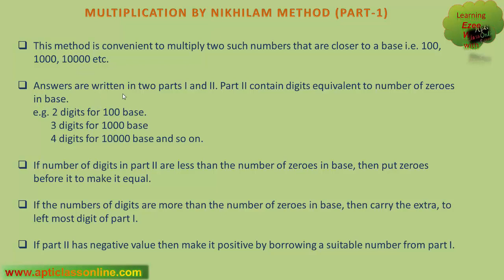Answers are written in two parts, part 1 and 2. Part 2 contains as many digits as the number of zeros in base. For example, two digits for 100 base, three digits for 1000 base, four digits for 10,000 base and so on.